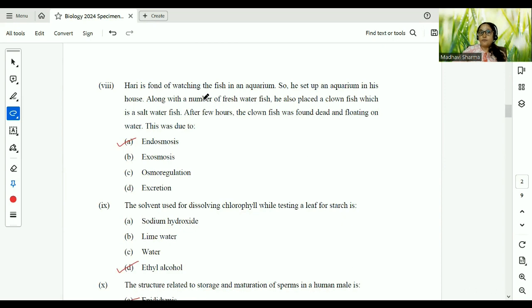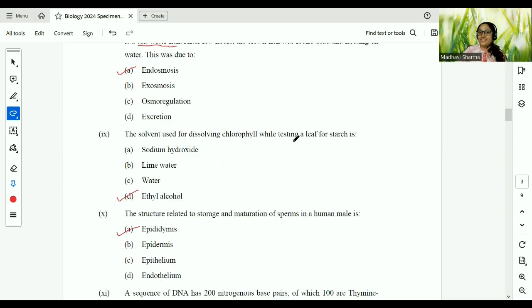Hari is fond of watching fish in an aquarium. So he set up an aquarium in his house. Along with a number of fresh water fish he also placed a clown fish which is a salt water fish. After few hours the clown fish was found dead and floating on the water because of endosmosis. Water from higher concentration that is water in the aquarium came into the clown fish's body because it had less water. The solvent used for dissolving chlorophyll while testing a leaf for starch is ethyl alcohol. Basically it is a spirit. It has to be some spirit, methylated spirit or it can be ethylated spirit. Spirit means alcohol.